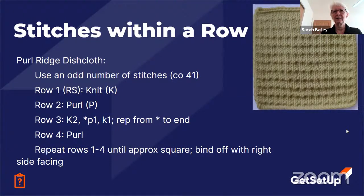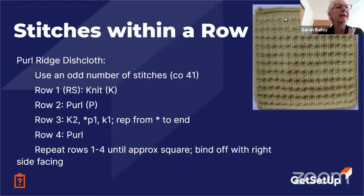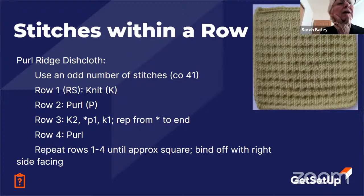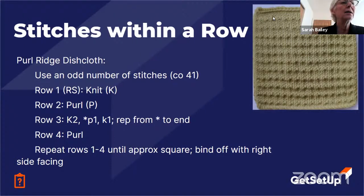Elaine: Think you could do it? My only question is, it looks like it's got three extra rows on the end. Sarah: Yeah, you're right. Here's your last pattern row, then you've got a purl row, and they added an extra row before the bind off row. Good eye, Elaine. I was going to guess it's because they were on the wrong side, but I think they just plain did it that way.